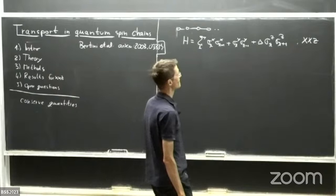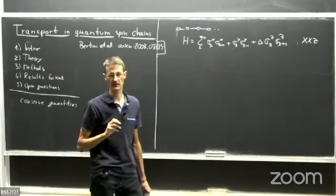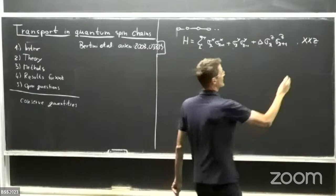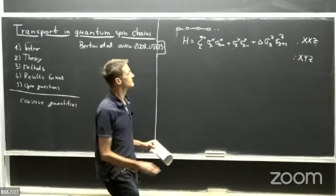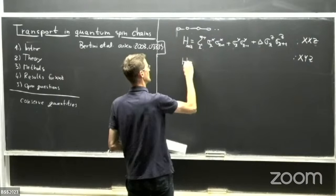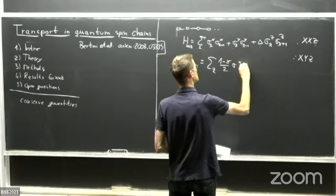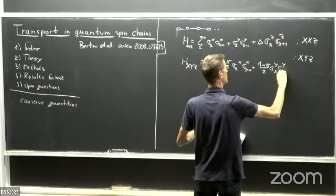This is called the XXZ Heisenberg model. The naming is: XXZ because in the XY plane the interaction strength is isotropic — the same strength — whereas in the Z direction there is this anisotropy parameter Δ. Another version would be the XYZ model, where one would have three different prefactors for the XX, YY, and ZZ terms. In that case the Hamiltonian could be written with factors like (1−γ)/2 · σ_x σ_x and (1+γ)/2 · σ_y σ_y, plus a ZZ term.